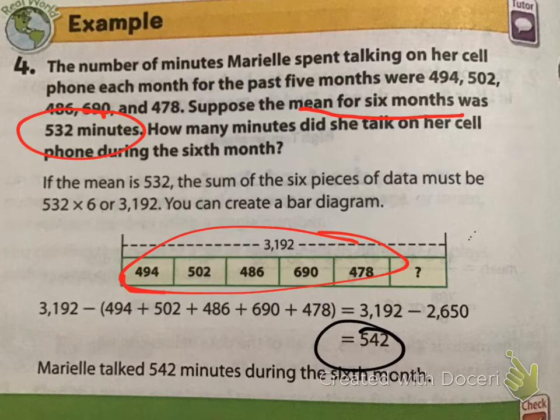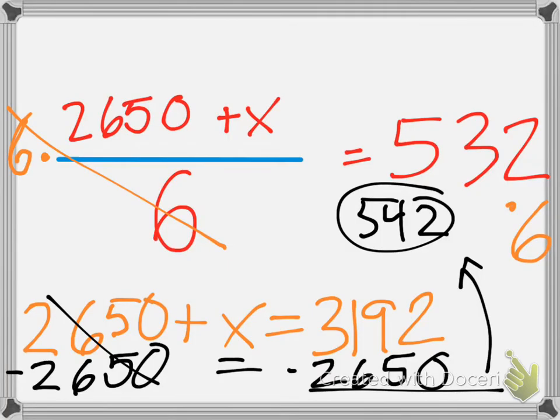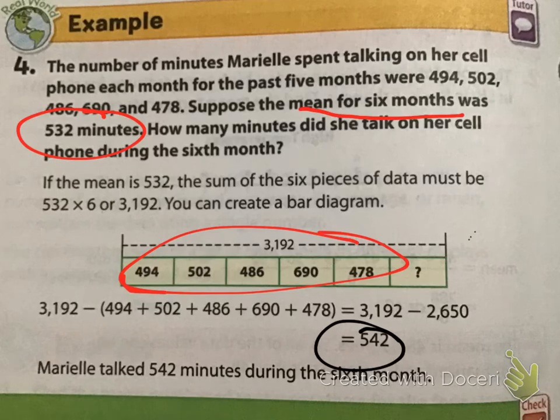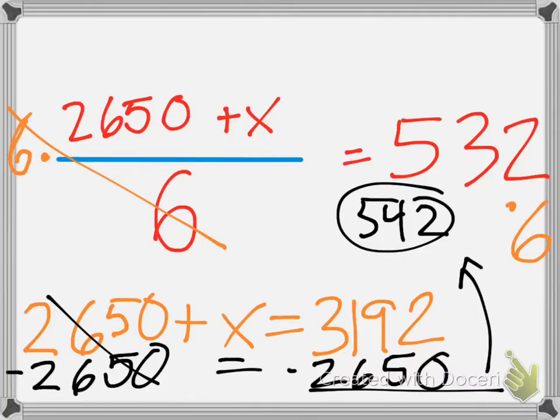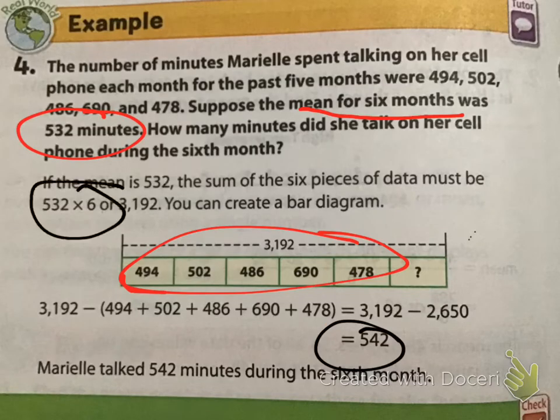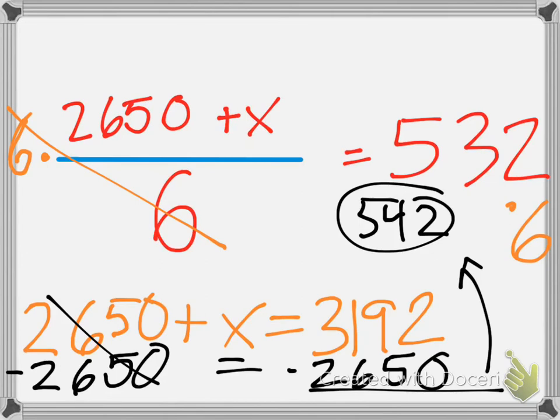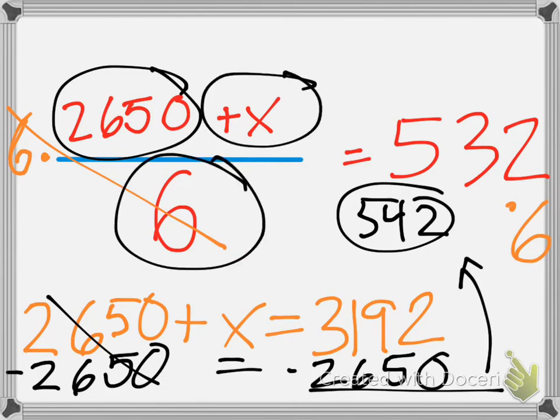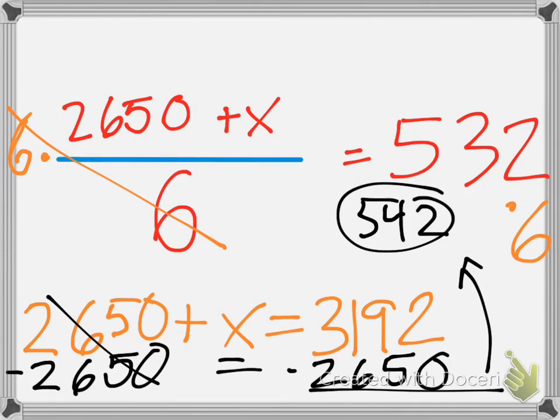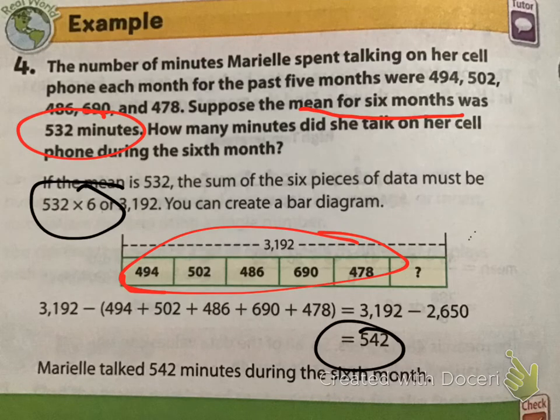I don't like the way that they showed it in this book, which is why I really wanted to show you this method. If you're ever given a problem where you don't know something, it's following that same pattern. But, we actually get to see it with our hands. Here, they did the multiply it by 6. But, we want to know why. This is why. Because of the way that it would be set up. And then, we go backwards from there. So, Mariel talked for 542 minutes during the sixth month.